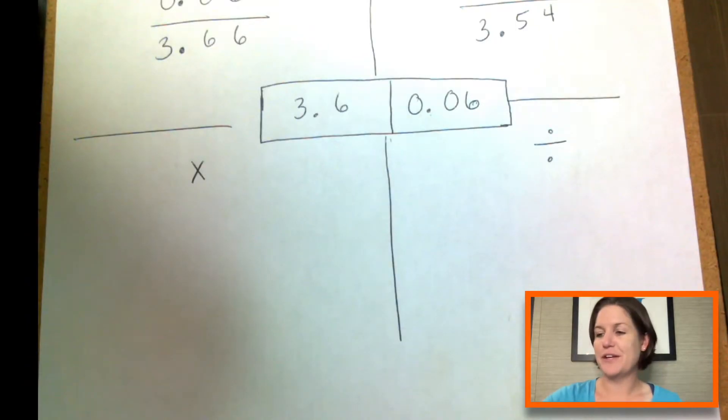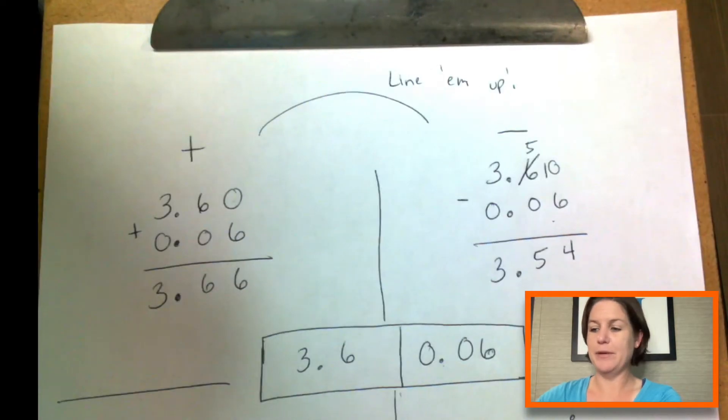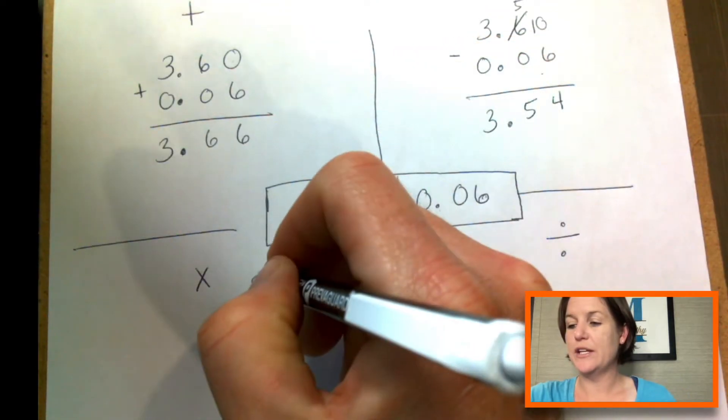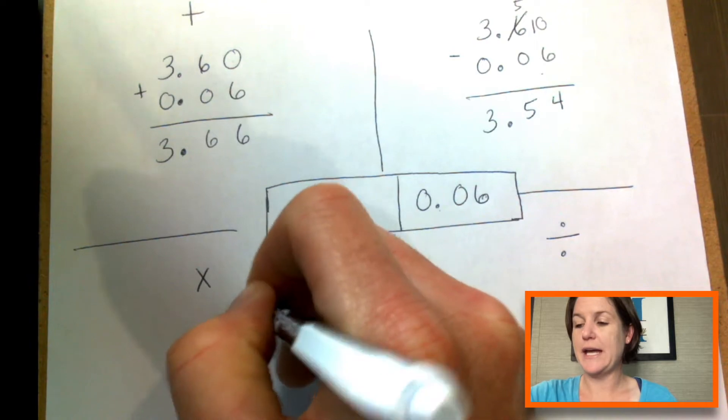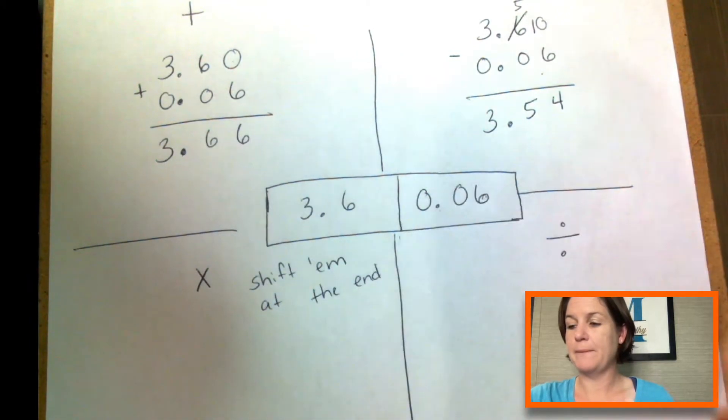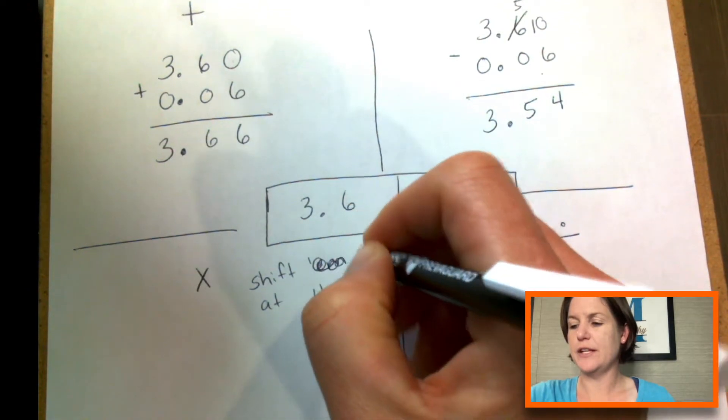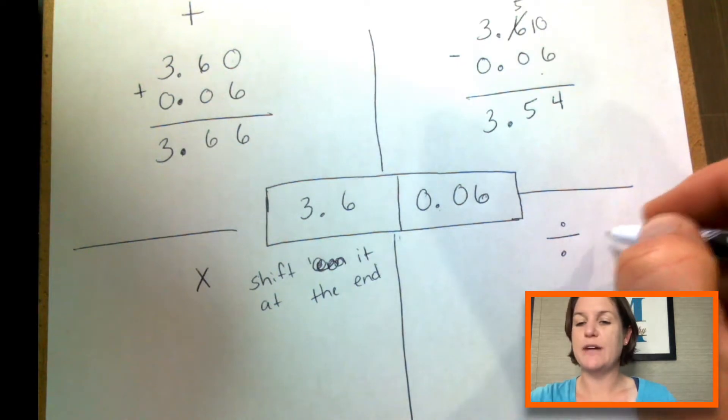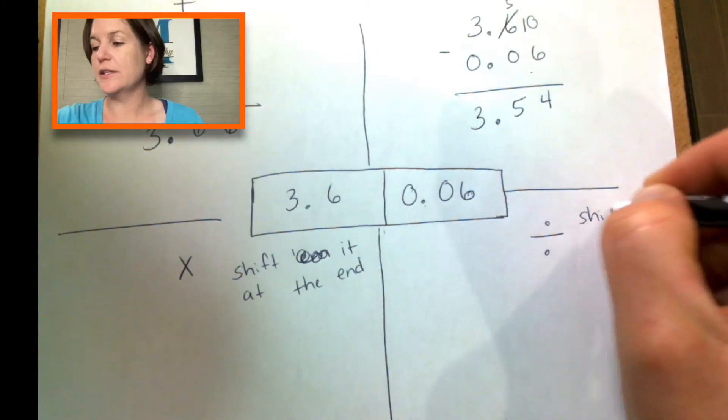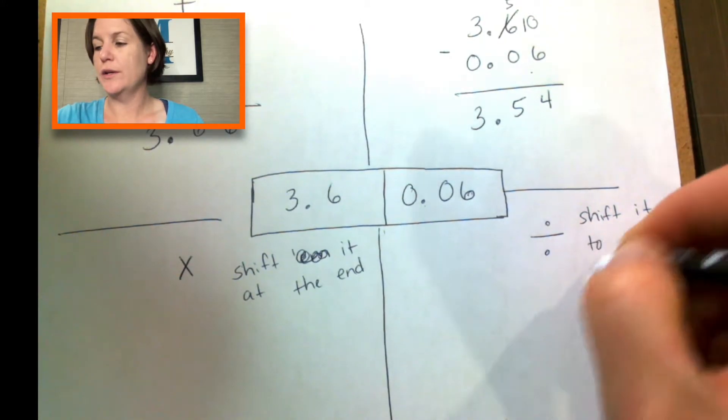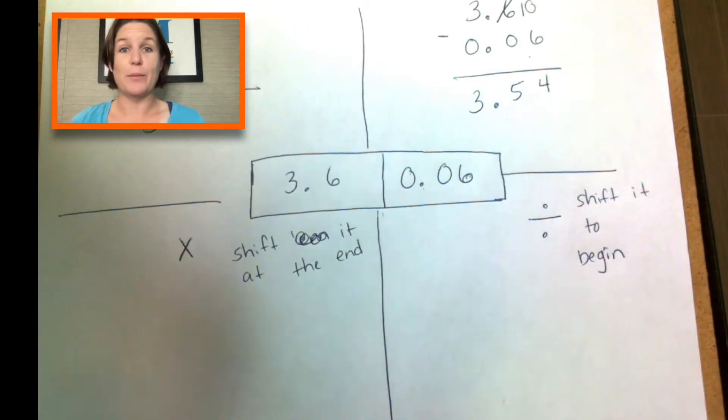Let's go ahead and get to the more challenging ones. They're fun. So I taught you that when you add or subtract with decimals, you need to line them up. But when you multiply with decimals, you shift it at the end. When you divide with decimals, you shift it to begin. Add or subtract, we line them up. When you multiply with decimals, we shift it at the end. And when you divide using decimals, you shift it to begin. These are just little rhymes that I have students memorize to help it make more sense.